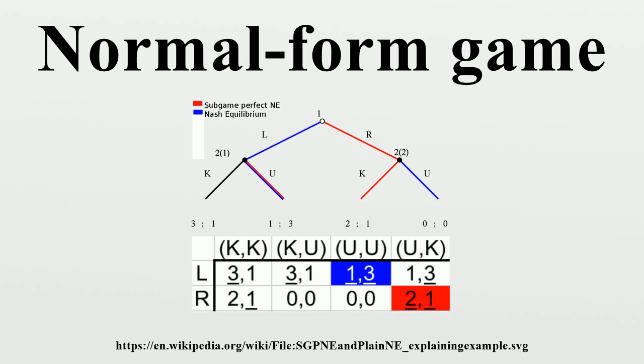Sequential games in normal form: These matrices only represent games in which moves are simultaneous. The above matrix does not represent the game in which player 1 moves first, observed by player 2, and then player 2 moves, because it does not specify each of player 2's strategies in this case.